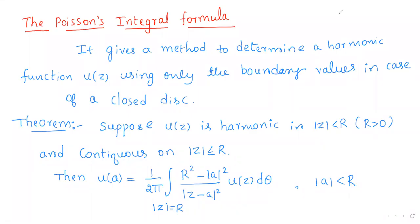Hello everyone. In this video, we shall derive the Poisson's integral formula. The Poisson's integral formula gives a method to determine a harmonic function u of z using only the boundary values in the case of a closed disk.